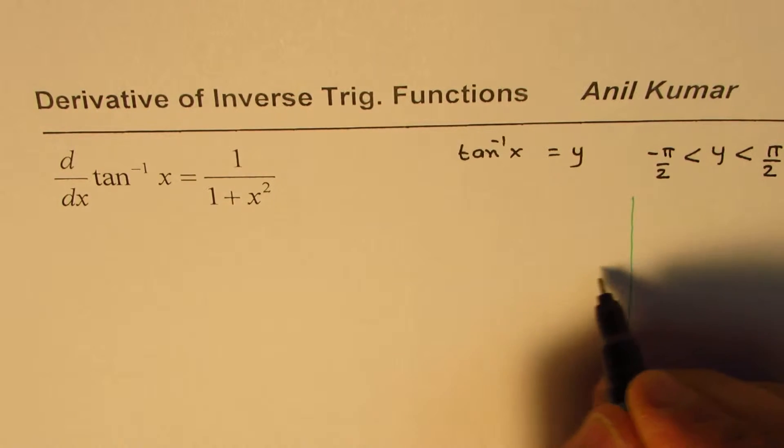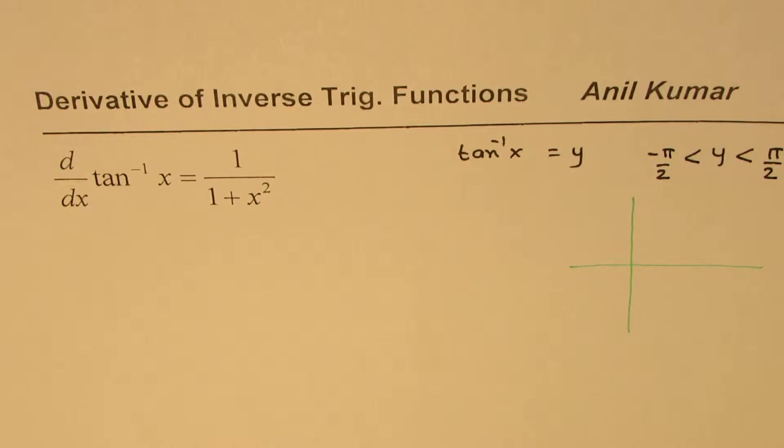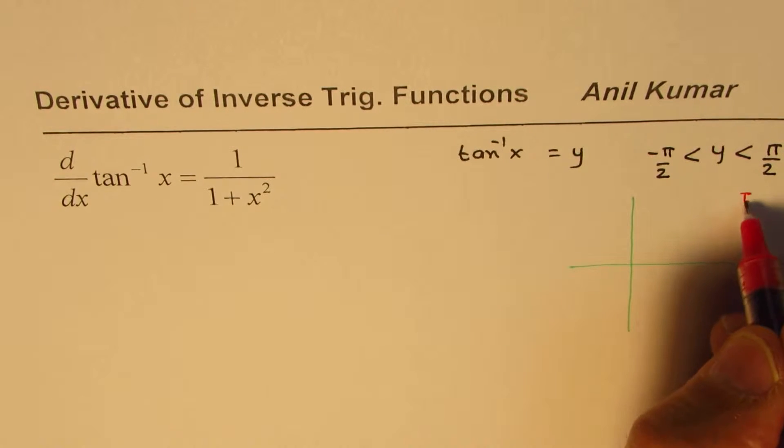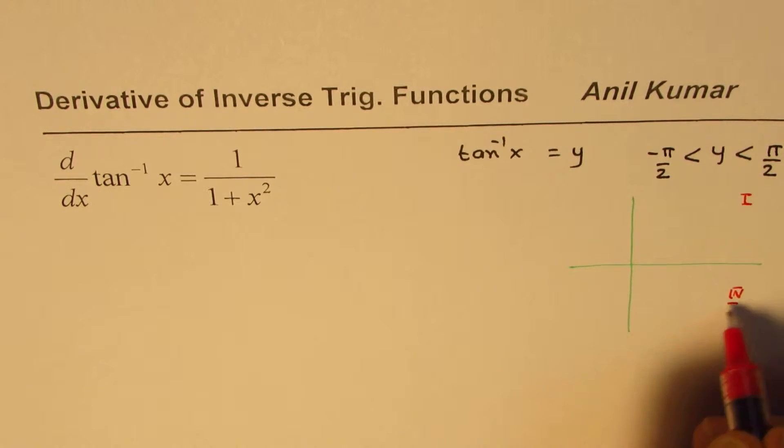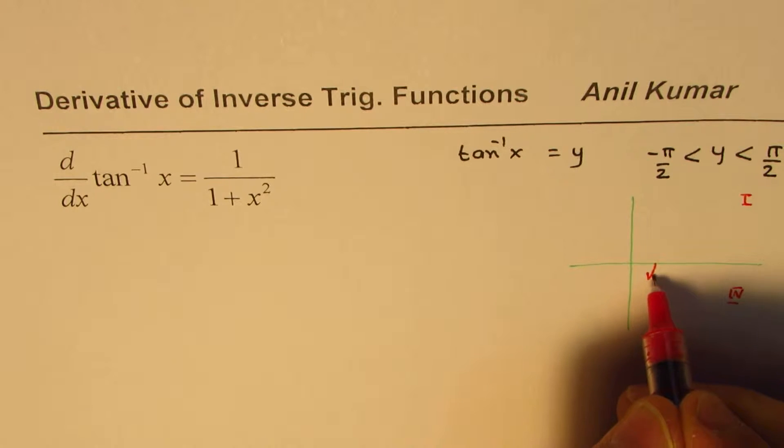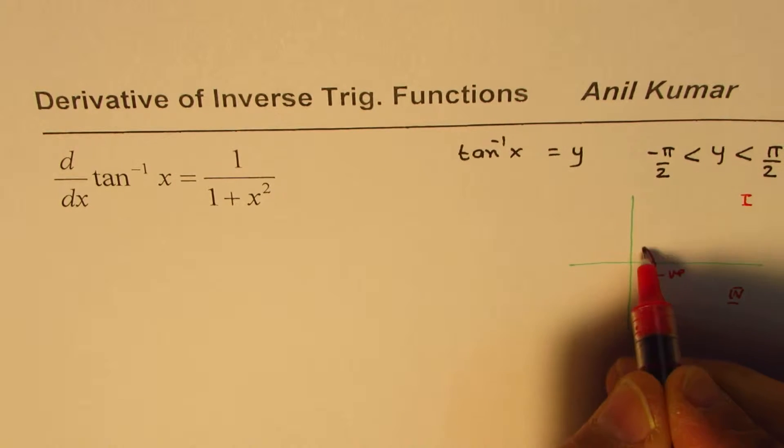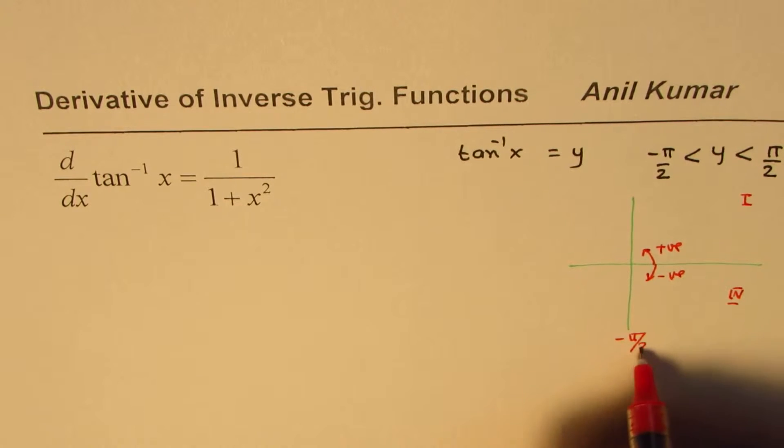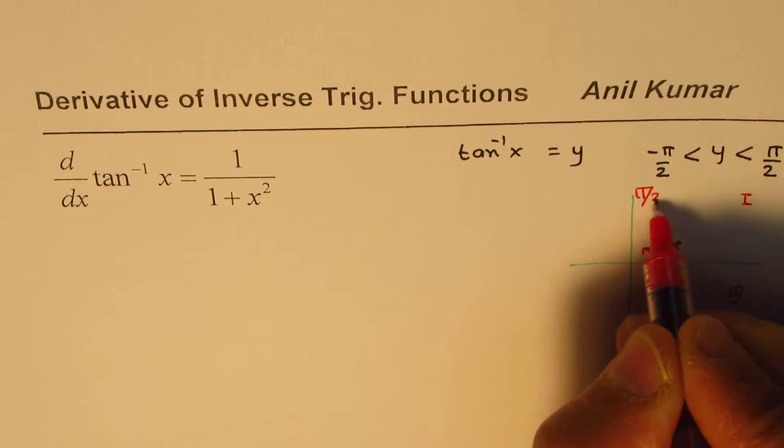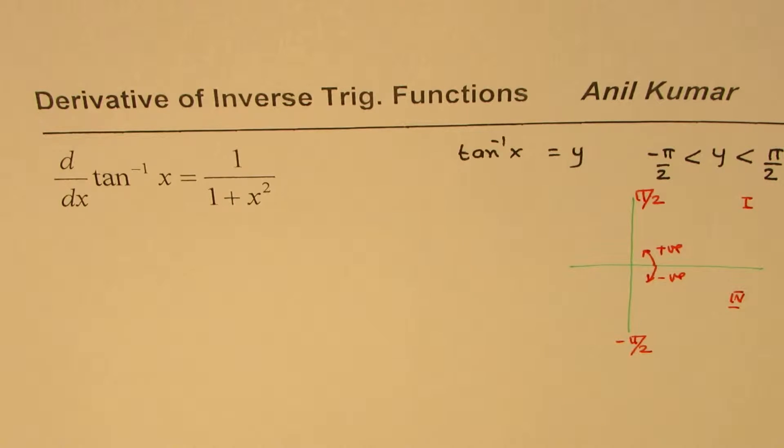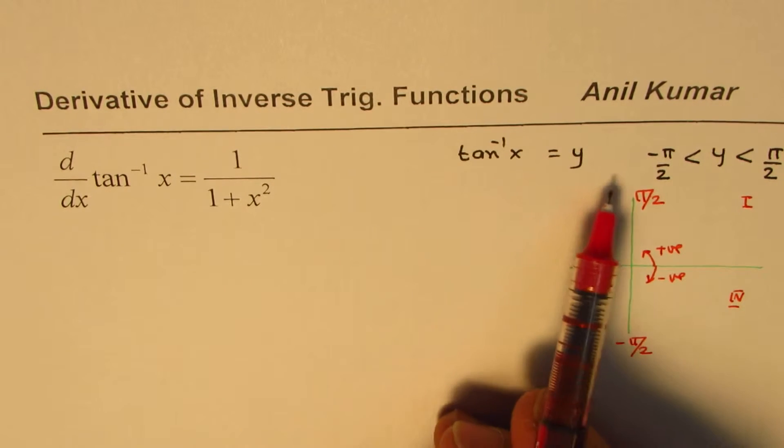If you look into your coordinate plane, we are talking about quadrant 1 and quadrant 4. Any angle in this direction is negative, and in this direction is positive. So that is minus pi by 2 and this is plus pi by 2. That is the coordinate range where this inverse is being defined.